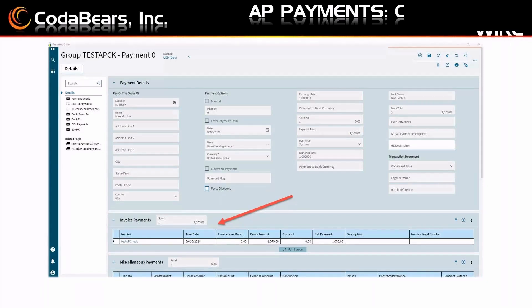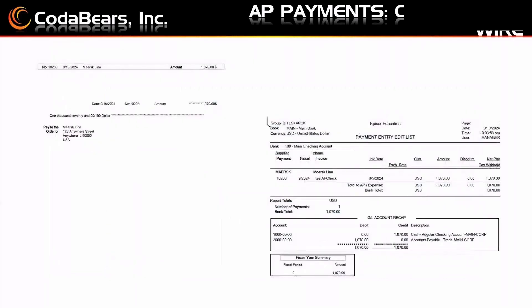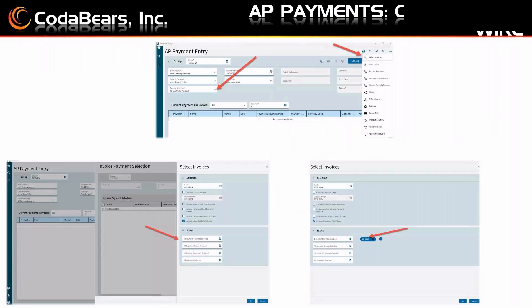Then we have the invoice payments selected. The outcome is two different things. First, we're going to see the check — this is the normal check you see on the top left. It's not customized; it's the standard out-of-the-box check formatting. The check is written for $1,070. You also get a payment entry list, which will show me where the check run is going to be posted.